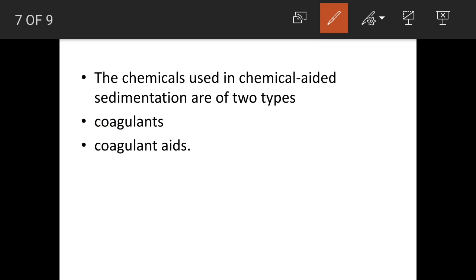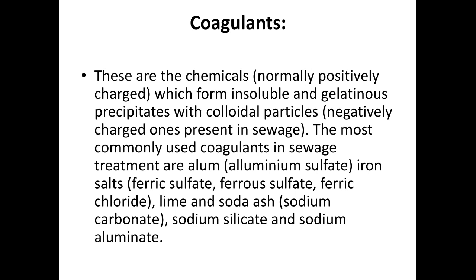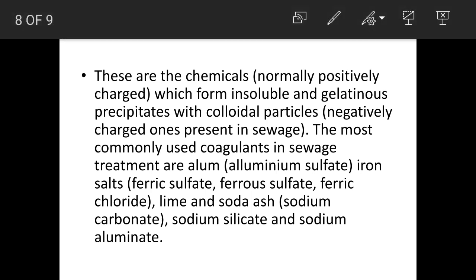Chemical-aided sedimentation uses chemicals to remove suspended particles, and this is referred to as chemical precipitation or chemical-aided sedimentation. The chemicals used are called coagulants. Coagulants are positively charged chemicals which form insoluble or gelatinous precipitates with colloidal particles that are negatively charged and present in the sewage. The negatively charged sewage particles bind with the coagulants to form an insoluble precipitate.